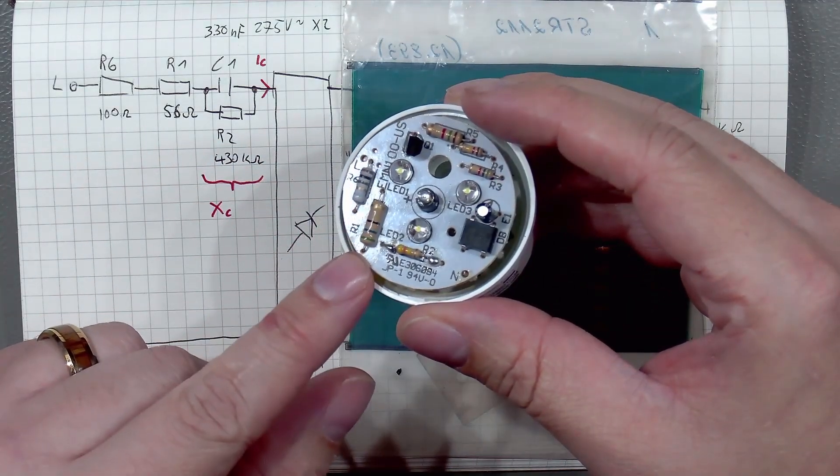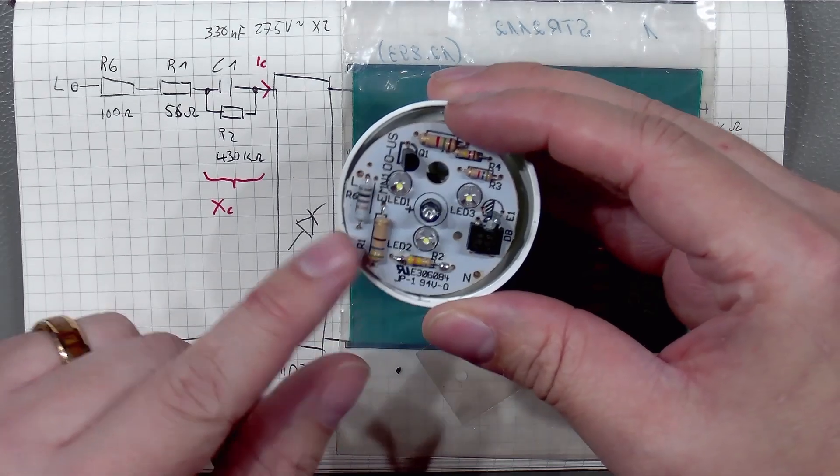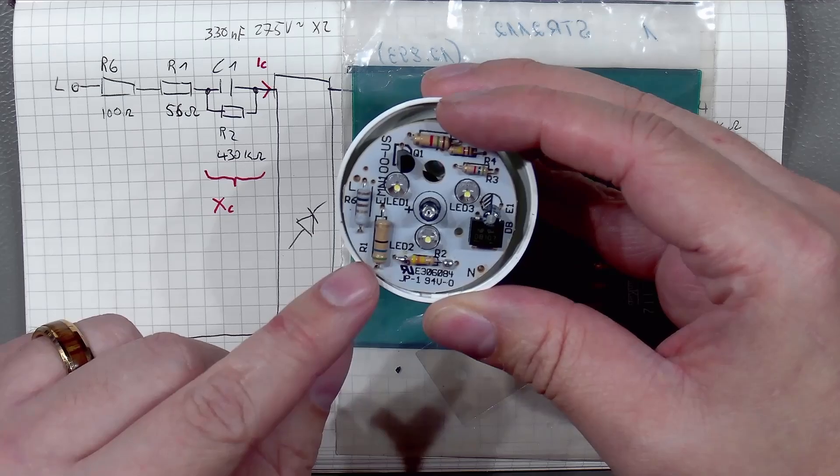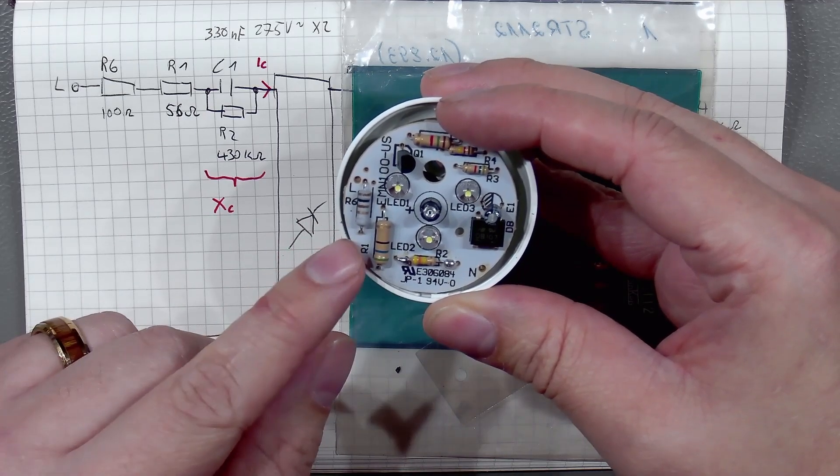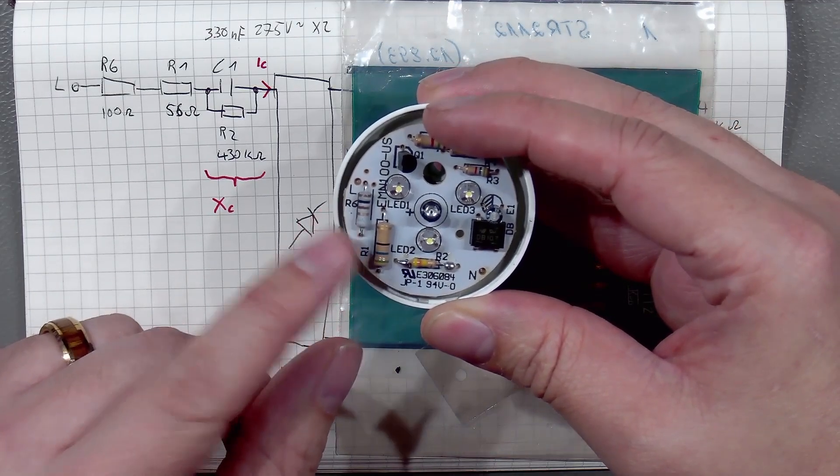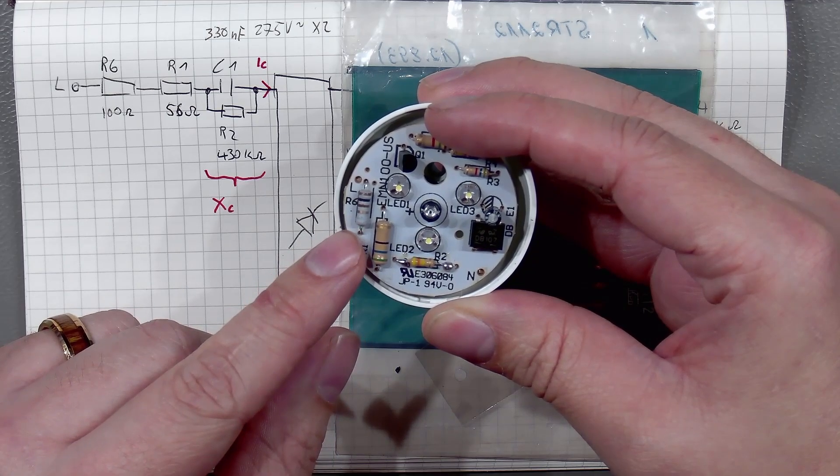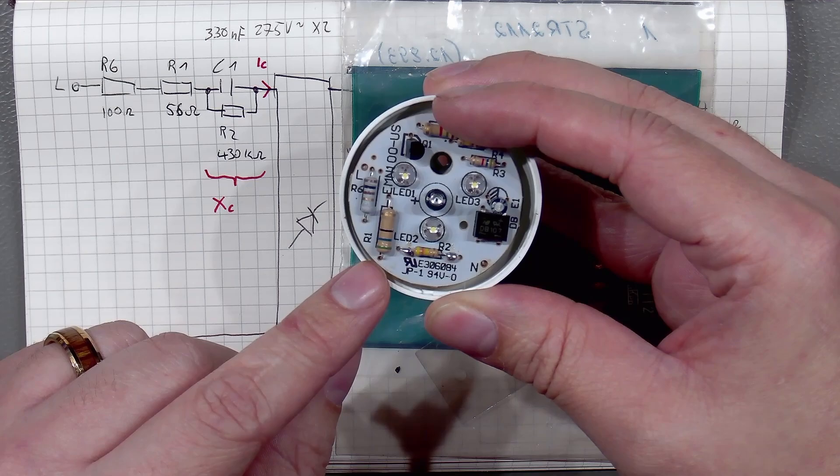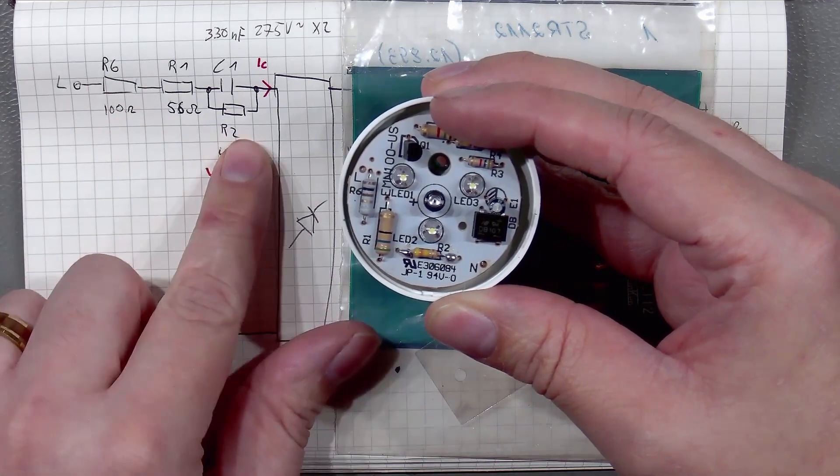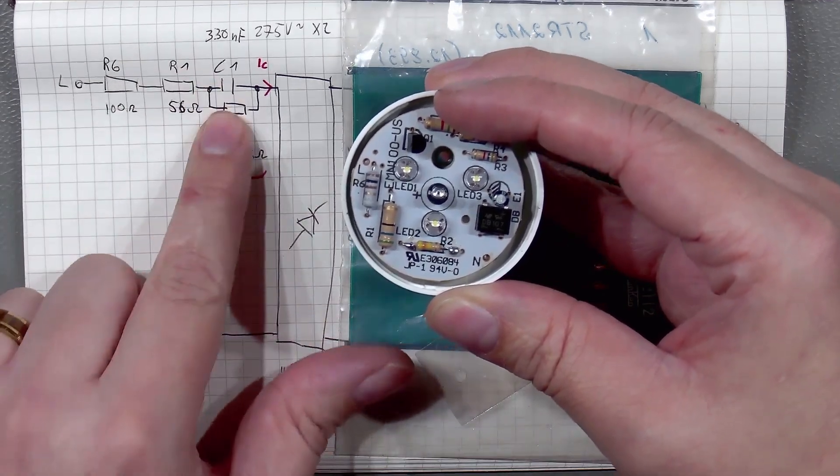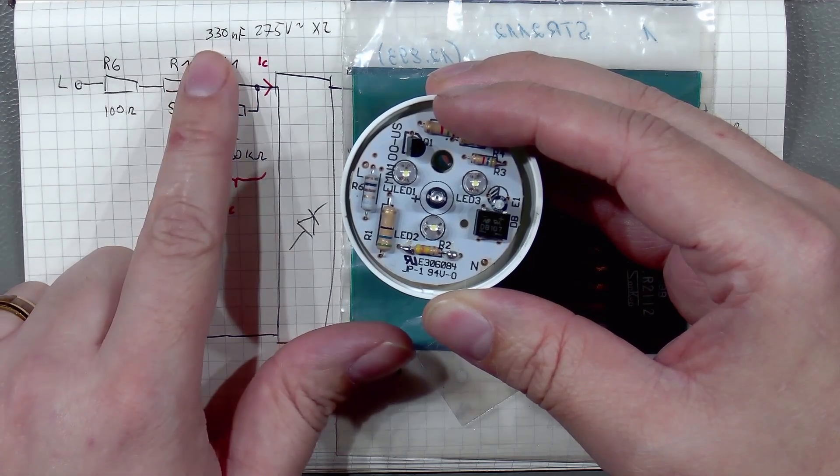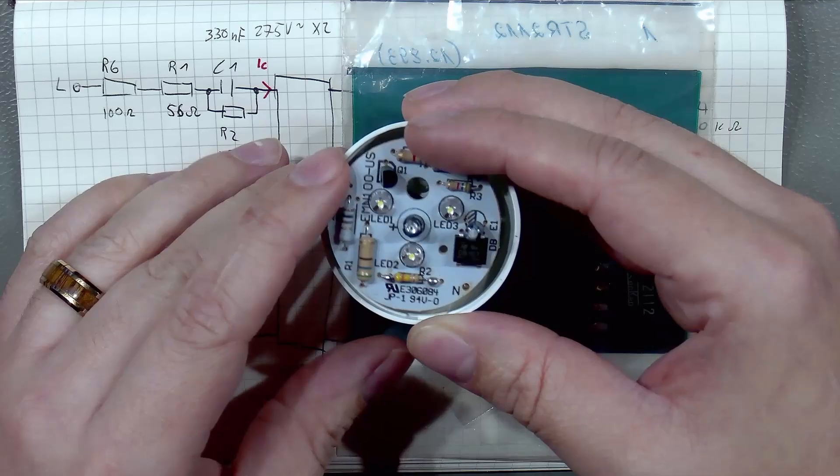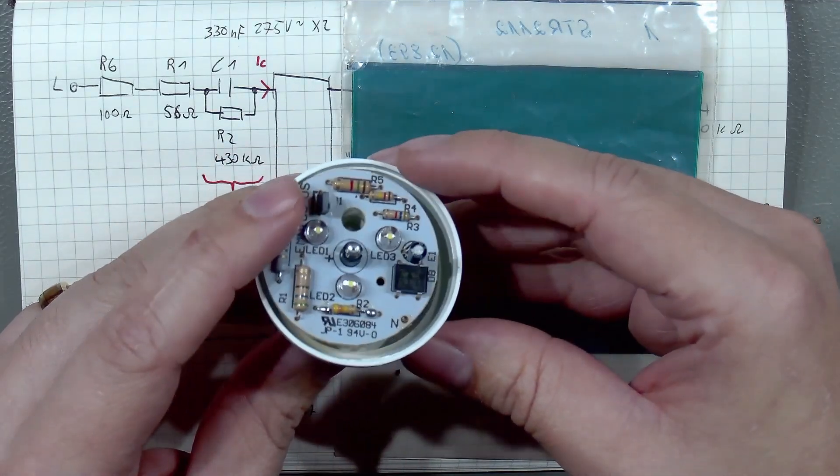Also we have two resistors in series, R1 and R6. R6 seems to be a flame-proof fusible resistor kind of deal. It is 100 ohm and the R1 is 56 ohm as we can see here. The big capacitor on the other side is a 330 nanofarad capacitor. It is an X2 security capacitor, so that is quite good.